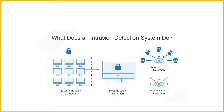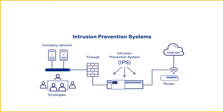This is why an intrusion prevention system comes into the role. IPS is like an IDS but actively blocks identified threats instead of simply raising an alert. An intrusion prevention system is a network security tool — either a hardware device or software — that continuously monitors a network for malicious activity and takes action to prevent it.